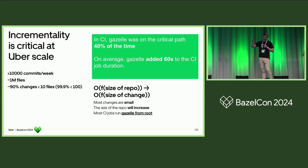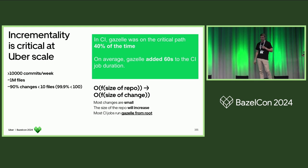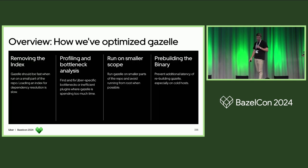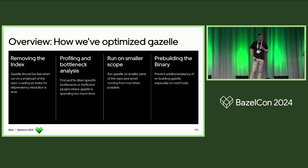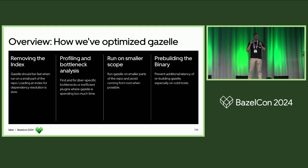Most changes are small — this is very true in many large repos — and the size of the repo will only get bigger. So here's an overview of how we optimized Gazelle. First, we removed the index. We don't want to have to look at the entire build graph to load our import path to target mapping. We want to be able to do that somehow with patterns.